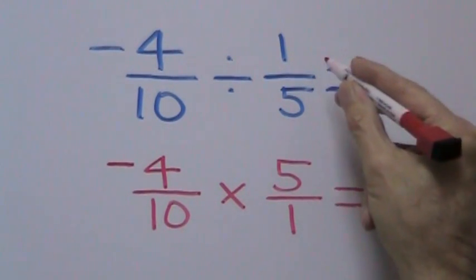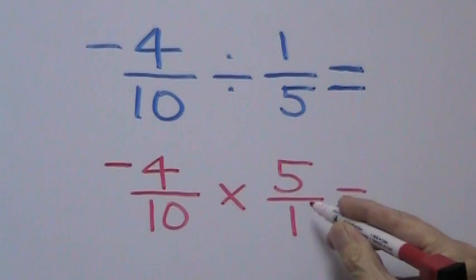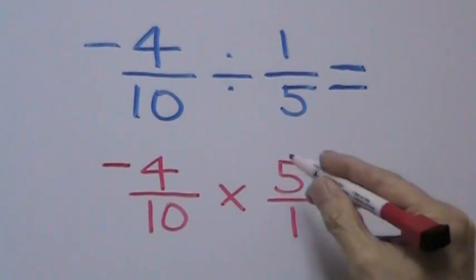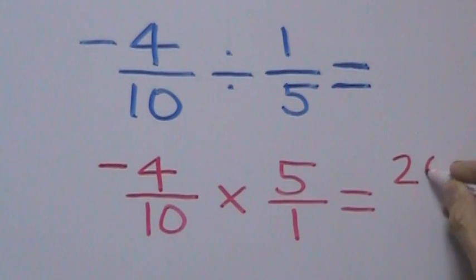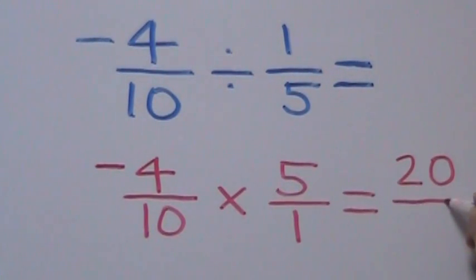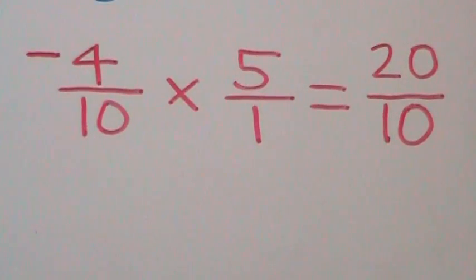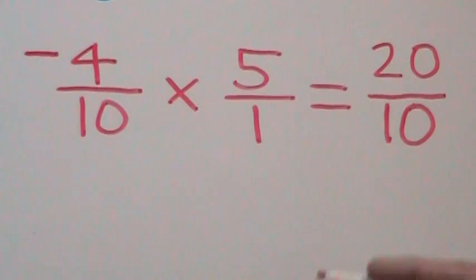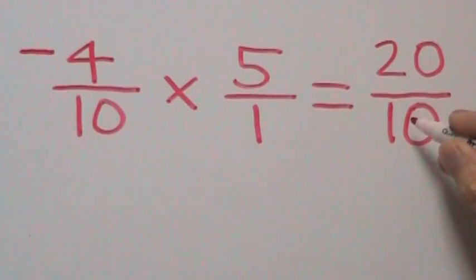Once again, we've flipped our second fraction. Now all we do is multiply across: 4 times 5 gives us 20, and 10 times 1 gives us 10. We can see that we have an improper fraction — our numerator of 20 is greater than our denominator of 10.